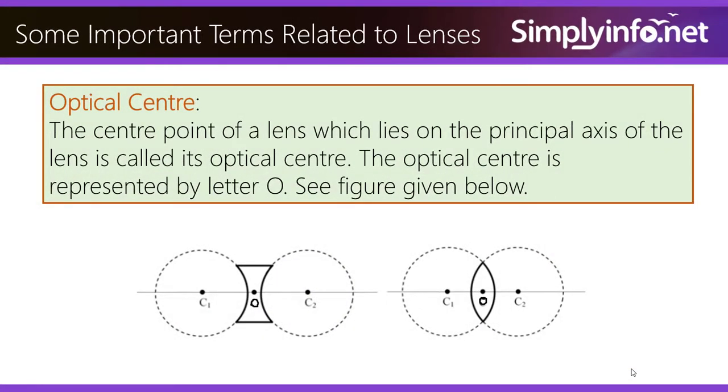Some important terms related to lenses. The center point of a lens which lies on the principal axis of the lens is called its optical center. The optical center is represented by letter O. See figure given below.